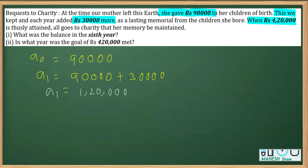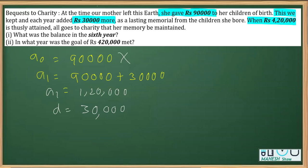Now we have a₁ = ₹1,20,000, and similarly we can find the common difference. Clearly ₹30,000 is added each year, so d = ₹30,000. Note that a here is ₹1,20,000 — not the birth amount — since it is after attaining one year. Now applying the formula aₙ = a + (n−1)d, we are going to find the balance for the sixth year.